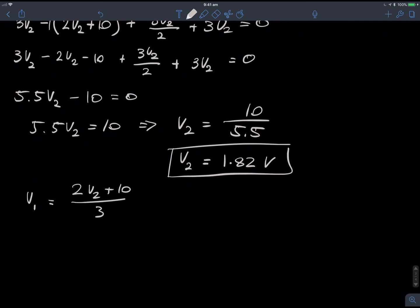2V2 plus 10 over 3. And all we do now is just put in this value for V2 we have here. So, 2 times 1.82 plus 10 over 3. And putting that in my calculator, I get 2 times 1.82 plus 10 over 3. That equals to 4.55 volts, approximately. So, there we have it. V1 equals 4.55 volts, and V2 equals 1.82 volts.